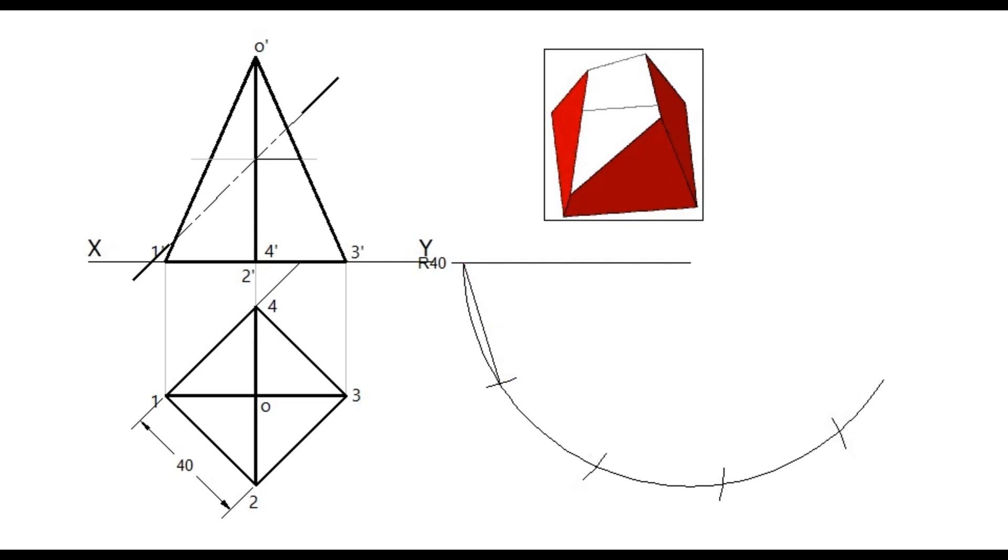Join these points with straight lines. Join these points to the center of the arc drawn with the slant edge as radius. All these lines should be very light because at the end we can darken the necessary lines. Name the points on the development.